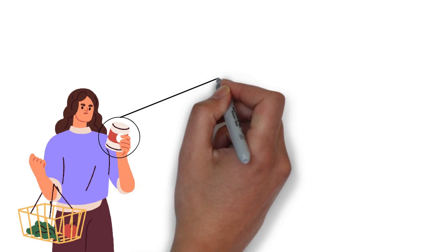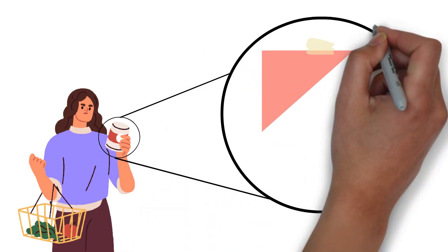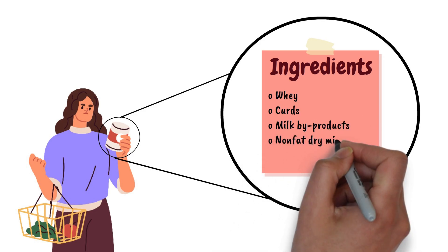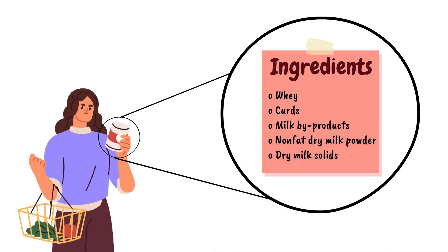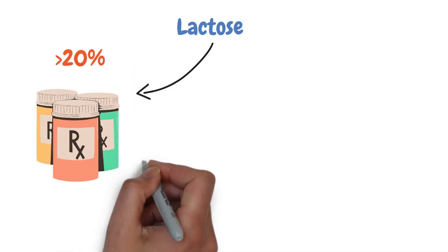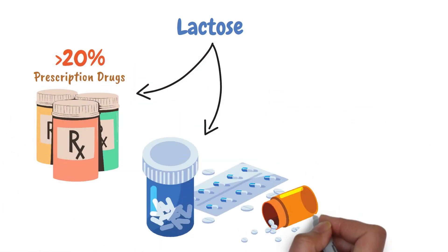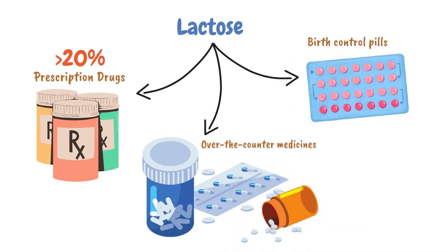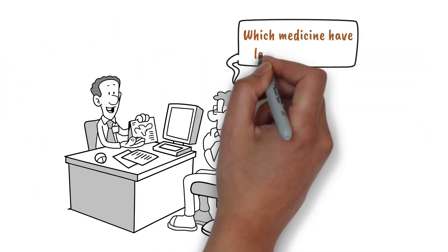If you are lactose intolerant, the best way to avoid symptoms is to read food labels. Steer clear of products with whey, curds, milk byproducts, non-fat dairy milk powder, and dry milk solids. Lactose also is found in more than 20% of prescription drugs and in some over-the-counter medicines. Birth control pills may contain lactose. Ask your doctor if a medicine has lactose before you take it.